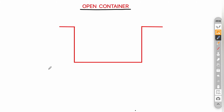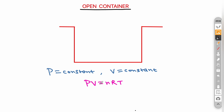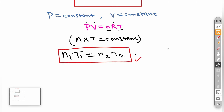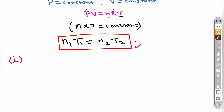Continuing our series on types of containers, we are now going to talk about open containers. In an open container, two things are constant: pressure and volume. As per the ideal gas equation, PV = nRT. Since P, V, and R are all constant, n multiplied by T must also be constant, which means n1T1 = n2T2 — initial moles multiplied by initial temperature equals final moles multiplied by final temperature.